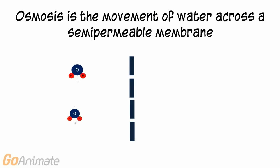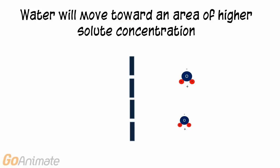In osmosis, water moves through a semi-permeable membrane, which is a membrane that allows water through but not solute. Water will move toward an area of higher solute concentration.